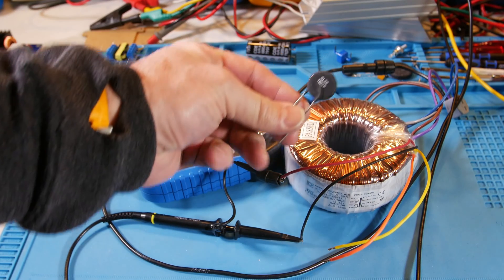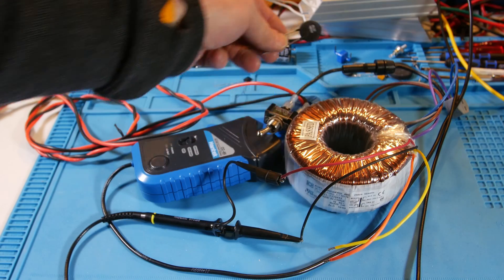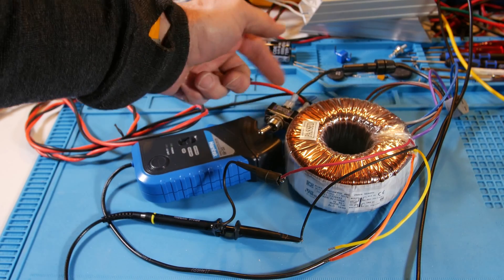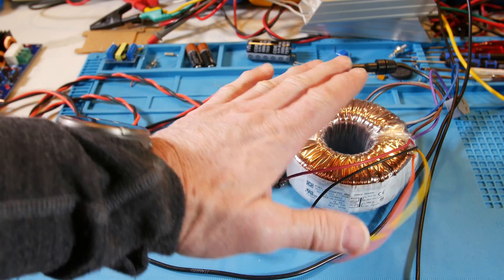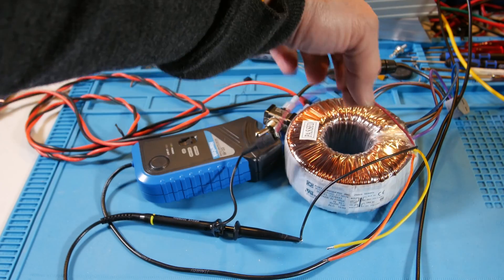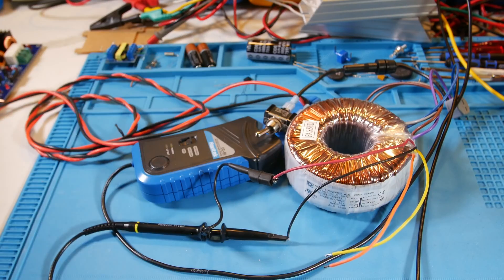But that's why we want to use one of these thermistors here in line with the fuse so that we limit the inrush current. Once we hook this to bridge rectifier, bridge rectifier, let me show you.